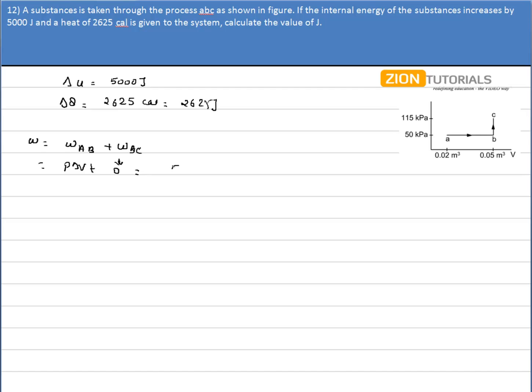Pressure is 50 kilopascals into change in volume, that is 0.05 minus 0.02. This gives me work done as 50 times 10 to the power 3 into 0.03, which equals 1500 J.